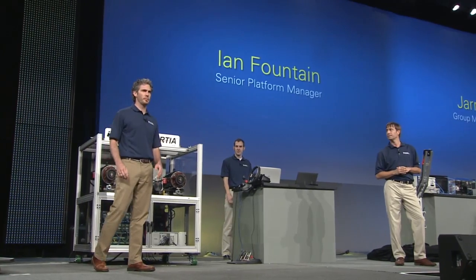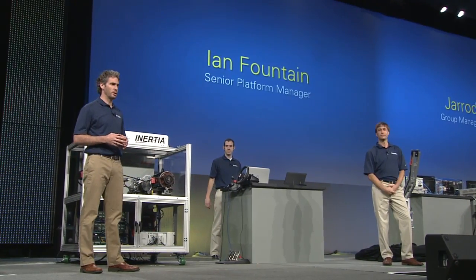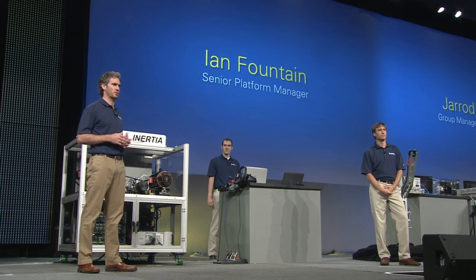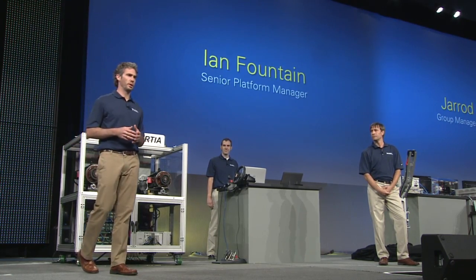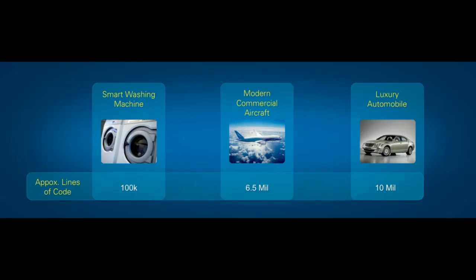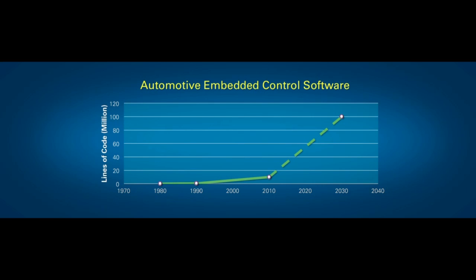Consumer demand and increasing government regulations are causing many of the devices we interact with on a daily basis to become significantly more complex. Engineers are finding that they can keep pace with these challenges by moving away from purely mechanical control solutions to the digital domain, adopting a software-based approach that leverages Moore's Law. However, this is causing an exponential growth in the amount of software. If you drove here today, you likely relied on millions of lines of code to get you here safely. It's clear that engineers need to test earlier, test more efficiently, and test more thoroughly.